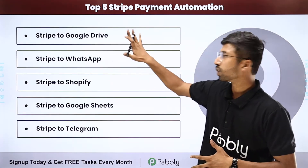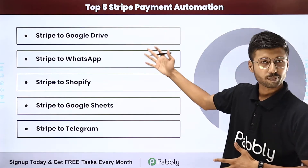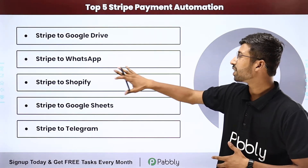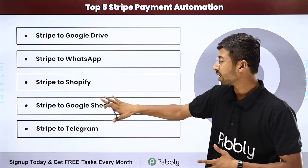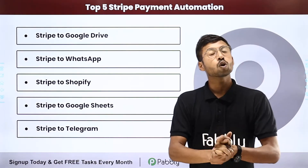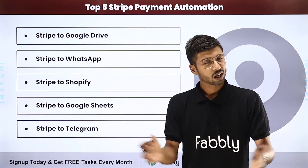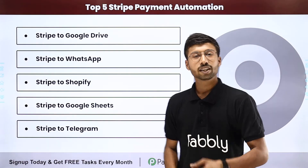The first automation is Stripe to Google Drive, second is Stripe to WhatsApp — my personal favorite. The third one is Stripe to Shopify, fourth is Stripe to Google Sheet, and our fifth automation idea is Stripe to Telegram. Let's have a look at them in detail.